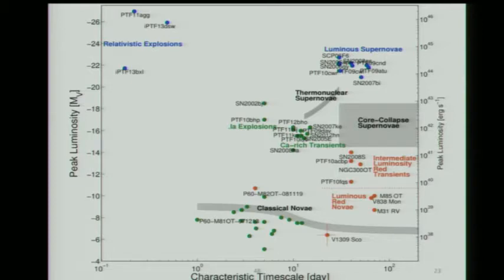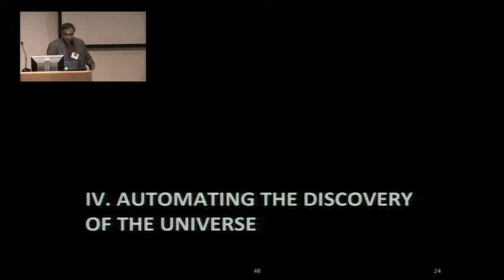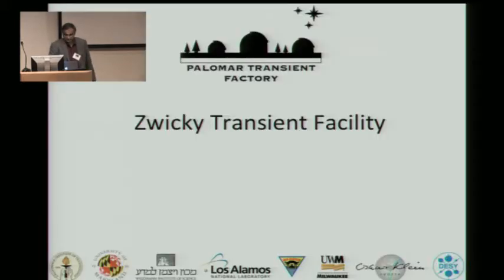The next part is, how do we automate the discovery itself? Because I've been always fascinated by automation. That leads me to the main part of the talk, which is automating the discovery of the universe. The best way to do astronomy, in my opinion, is to get the astronomers out of the dome, because they slow down the discovery. That's what ZTF is all about.